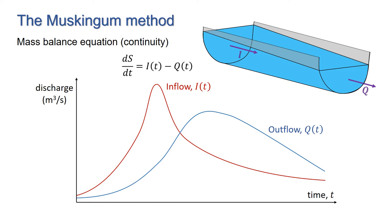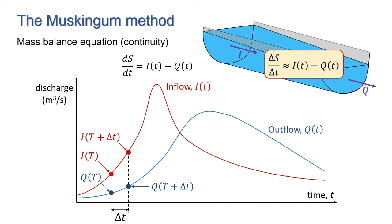We approximate the continuity equation by approximating ds by dt by delta s divided by delta t, where delta s is the change in storage and delta t is the time period over which that change in storage has taken place.